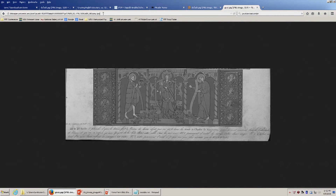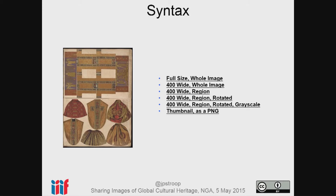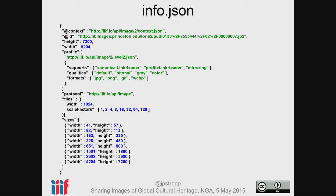As I said, you can change the quality — let's make it grayscale. And I can also make it a different format; trust me, it's a PNG. So that's the API for getting at the pixels, getting at images. You can also go to the same base URI for the image, tack on info.json to the end, and get a technical metadata document.